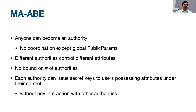In an MA-ABE, any party can become an authority at any point in time with no coordination required with any other party, except for the generation of global public parameters available to all. Different authorities control different attributes, there is no bound on the number of authorities that can come into existence during the system's lifetime, and all authorities can issue secret keys to users for their controlled attributes without any coordination with other authorities.